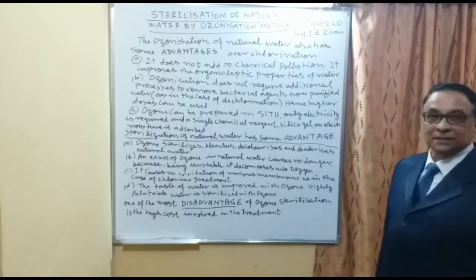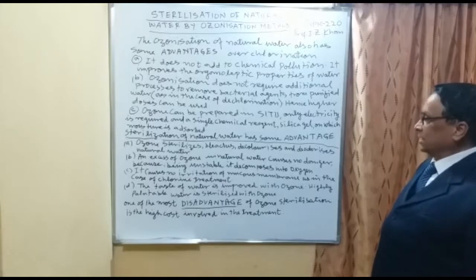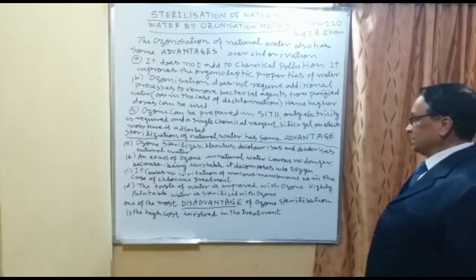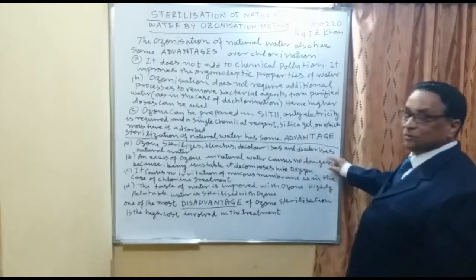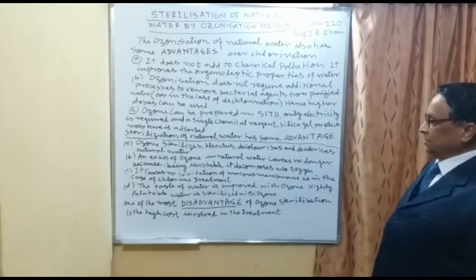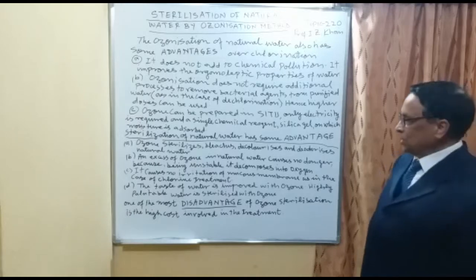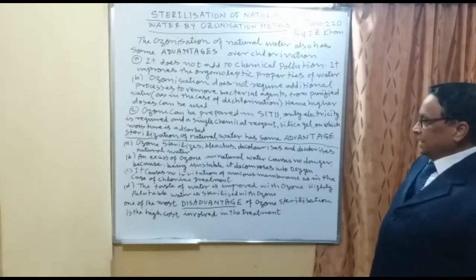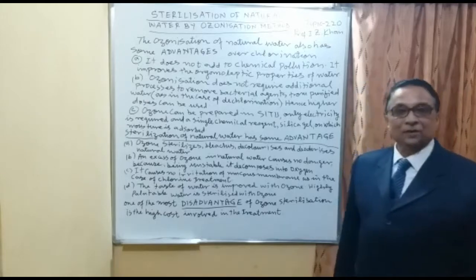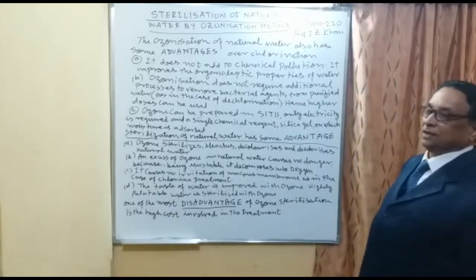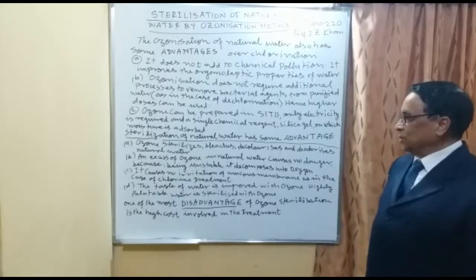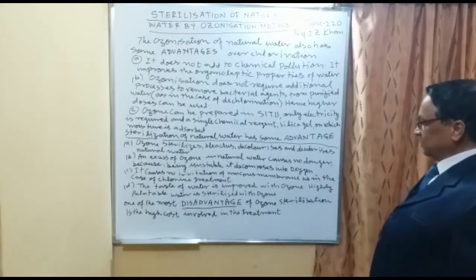C: Ozone can be prepared using only electricity and a single chemical reagent like silica gel on which moisture is absorbed. General advantages: A — ozone sterilizes, bleaches, decolorizes, and deodorizes natural water. B — an excess of ozone in natural water causes no danger because, being unstable, it decomposes again into oxygen molecules. C — it causes no irritation of mucous membranes, as in the case of chlorine treatment.